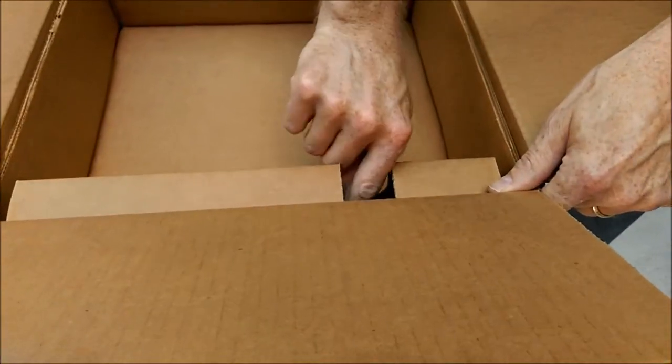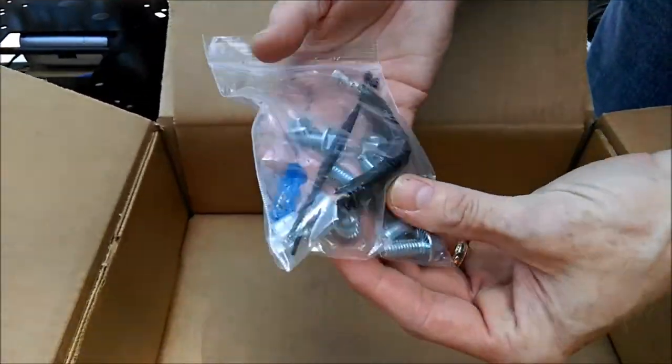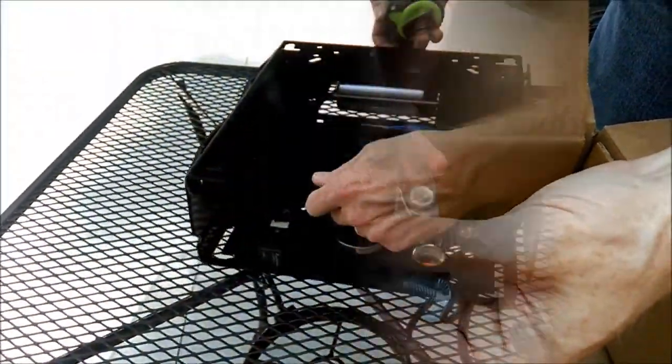Inside the box in the front you're going to find your hardware. It comes with the jumper wire and some nuts and bolts here for installation onto your unit.